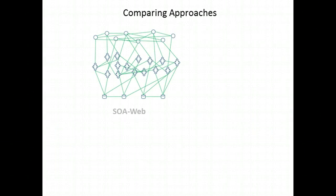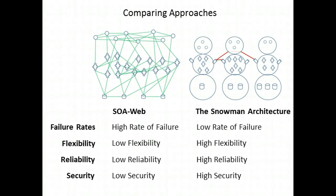When we compare the typical SOA web architecture to the snowman architecture, there are a number of compelling benefits to the snowman architecture: lower failure rates, greater flexibility, more reliability, and better security. The bigger the system we're trying to build, the greater these benefits will be.